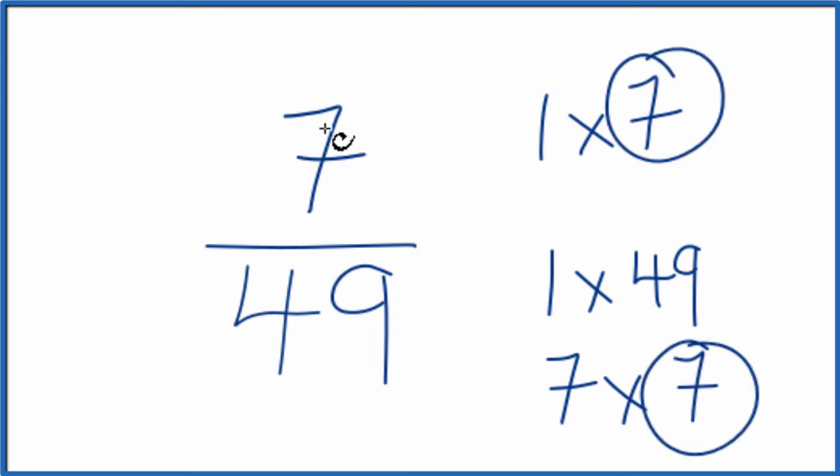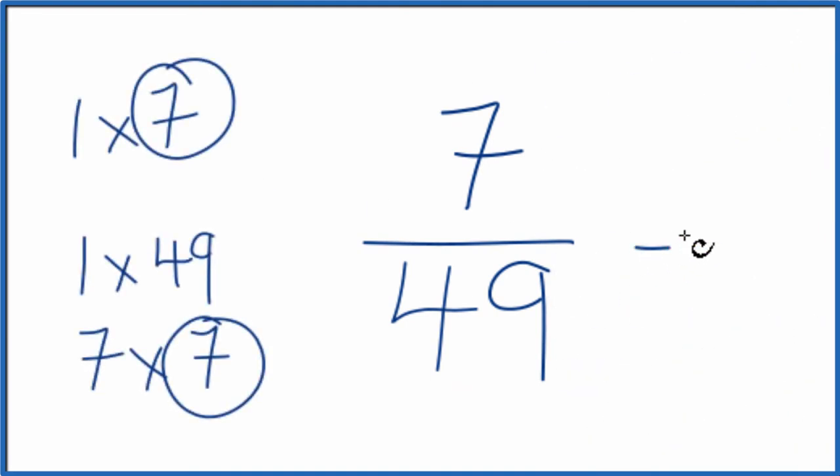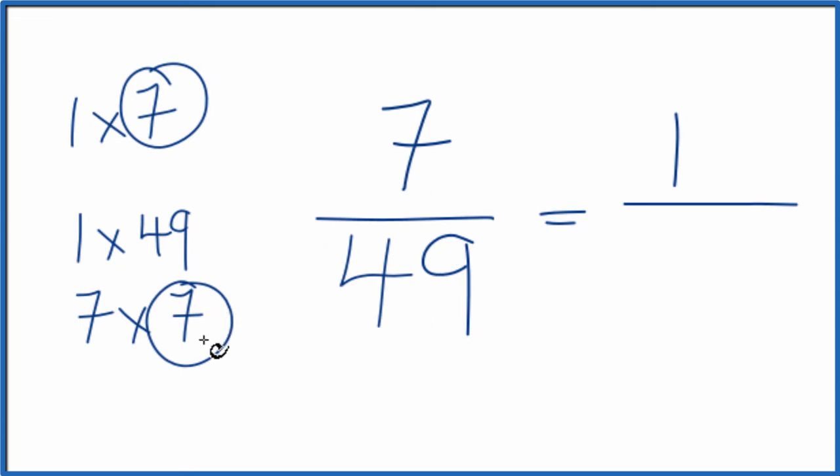So we divide the numerator by 7, the denominator by 7, and we'll have simplified 7 over 49. Let's move these over here. We divide 7 by 7, that gives us 1, and then we divide 49 by 7, that gives us 7, and we're done.